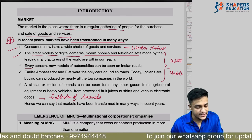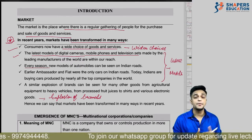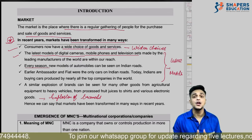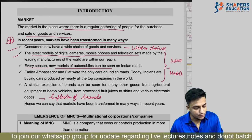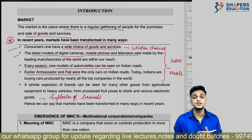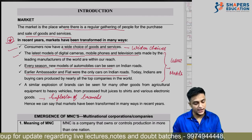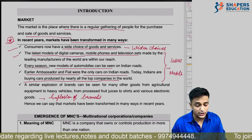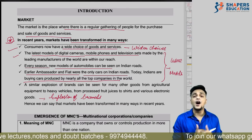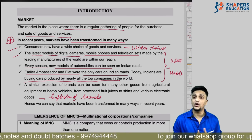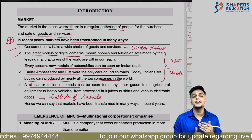Every season, new vehicle models appear — automobiles have become automated. We see new models of automobiles on roads every season. The example of Ambassadors and Fiat is given — those were the only cars on Indian roads earlier. Today Indians are buying cars produced by nearly all the top companies of the world. This is all because of globalization.